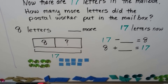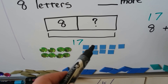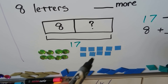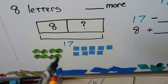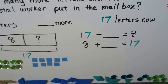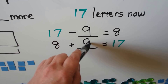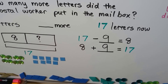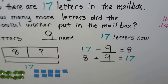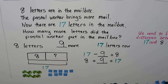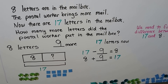We can use counters. Here are 8 counters, and we add more counters until there are 17 — counting up from 8 to 17, we add 9. So we add 9 counters to have 17 in all. That means 17 minus 9 is equal to 8, and 8 plus 9 is equal to 17. So 9 more letters were put into the mailbox. The difference between 17 and 8 is 9.